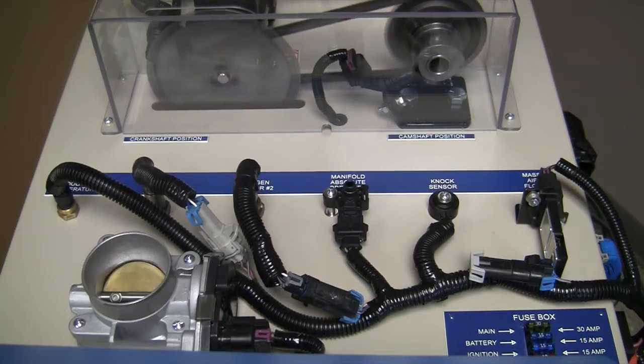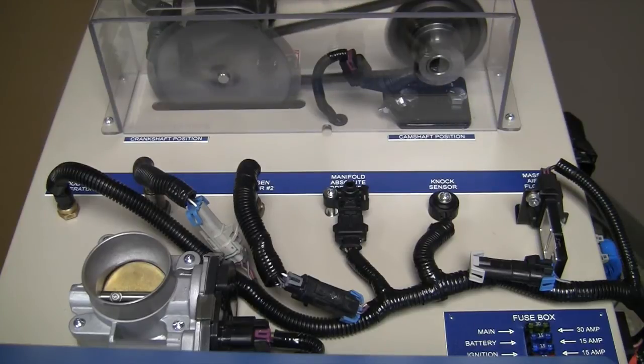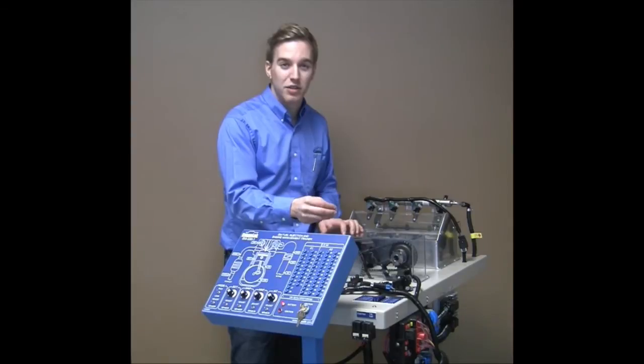So we have the accelerator pedal position sensor and pedal down underneath. On the top we have the throttle actuator control module. We also have the cooling temp, both oxygen sensors, NOx sensor, MAP sensor, as well as the mass air flow sensor with the integrated intake air temperature sensor.